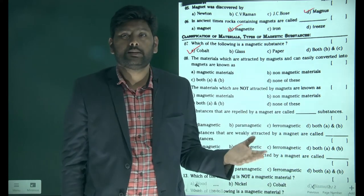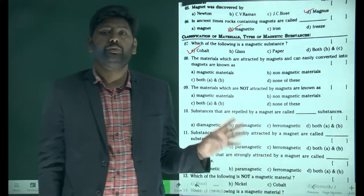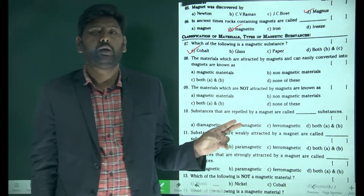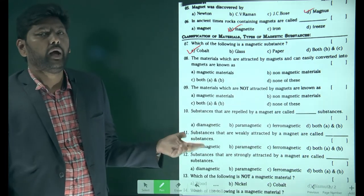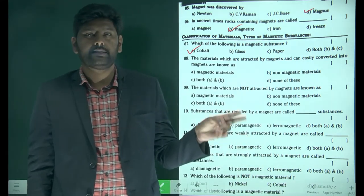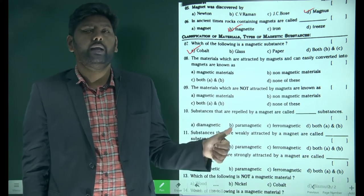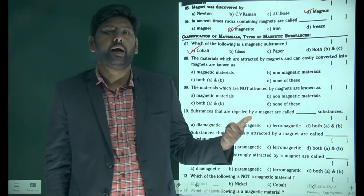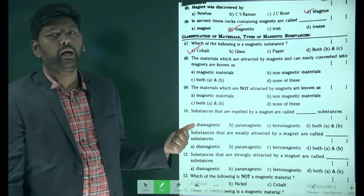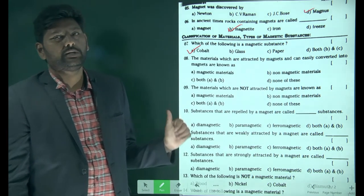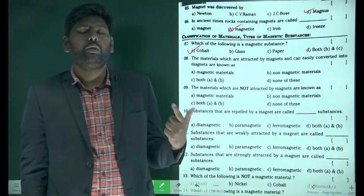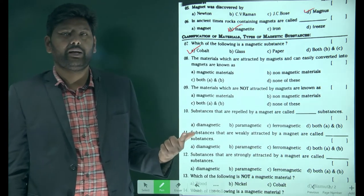Magnetic materials are classified into two types: non-magnetic material and magnetic material. Magnetic materials are further divided into three types: dia, para, and ferromagnetic materials. Diamagnetic materials are those not affected by magnetic fields.